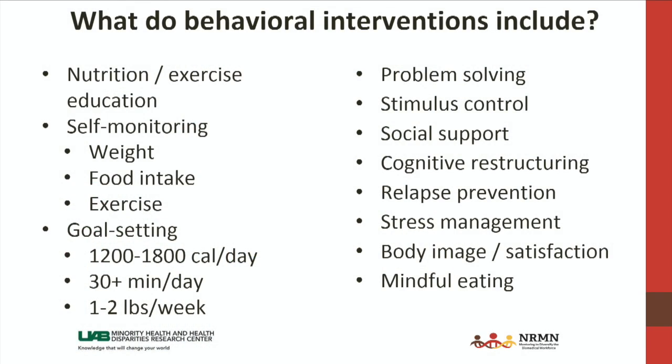Cognitive restructuring involves teaching people to take a more objective, rational, less judgmental approach to how they're doing so they don't spiral into feeling worse and worse about themselves. Relapse prevention addresses the idea that many people may have a little slip, hit a bump in the road, and then throw in the towel or feel like all hope is lost. Here it's really teaching people that you can have a slip and get back on track. What matters most is how you respond to the slip after it happens — that's really where the battle is won or lost.